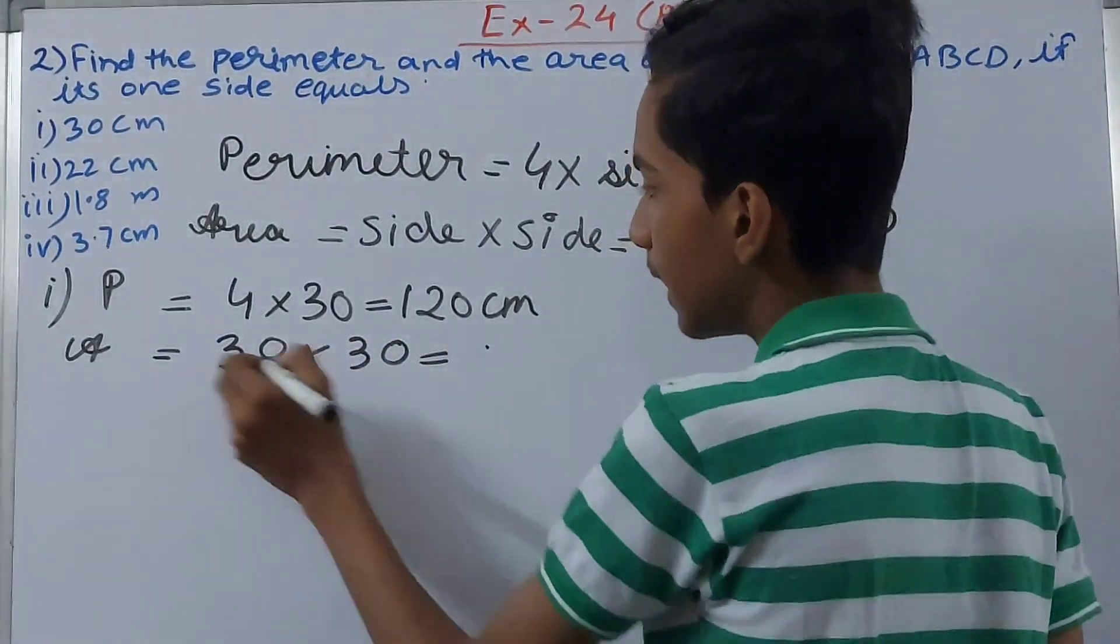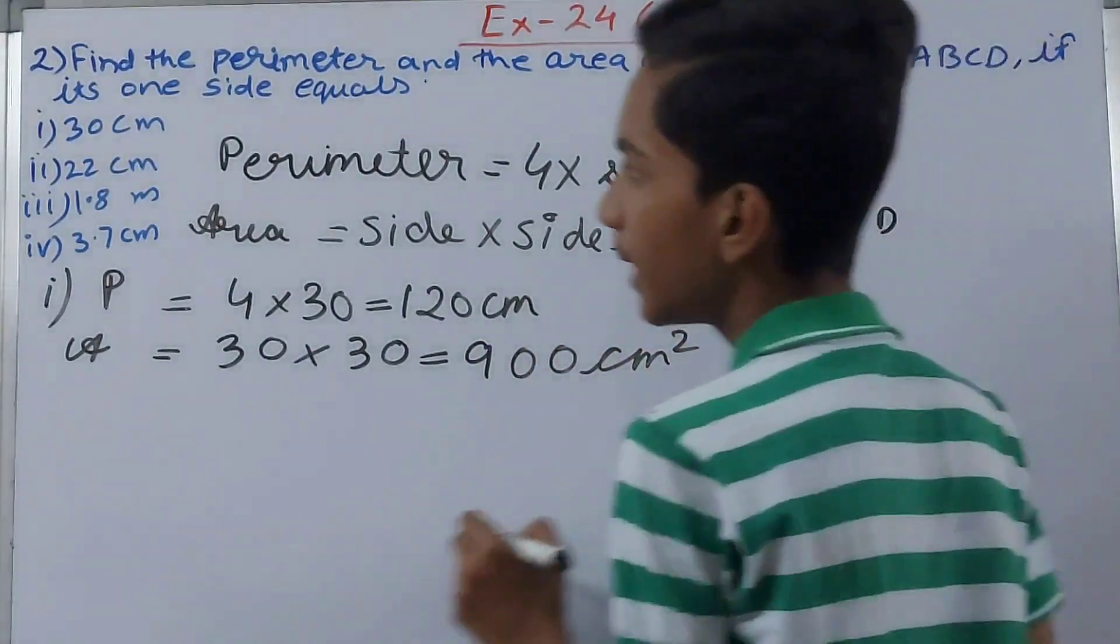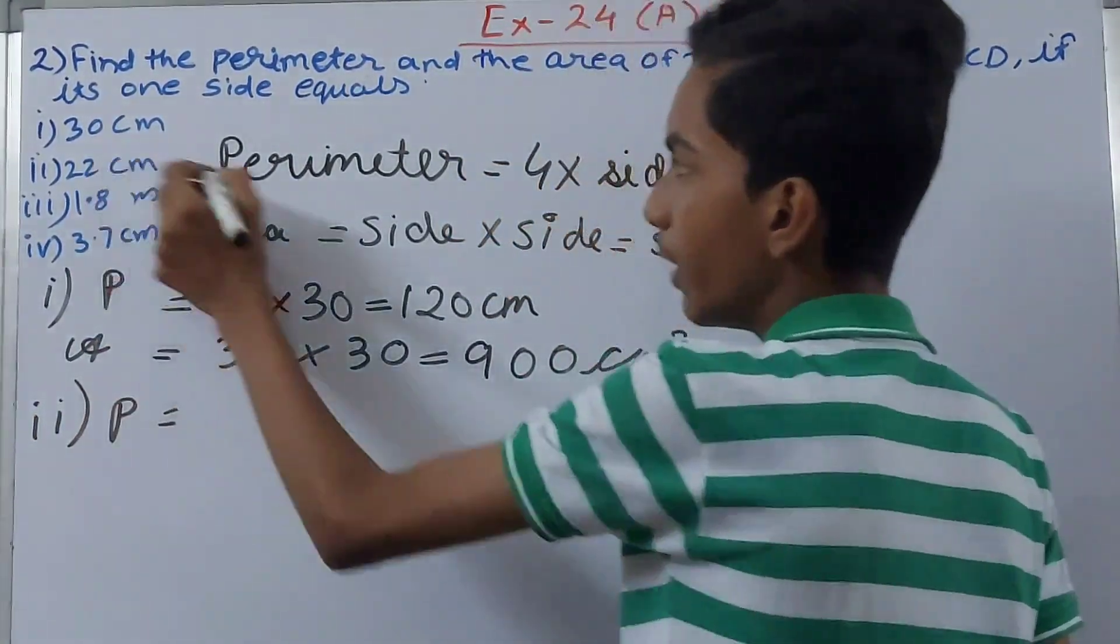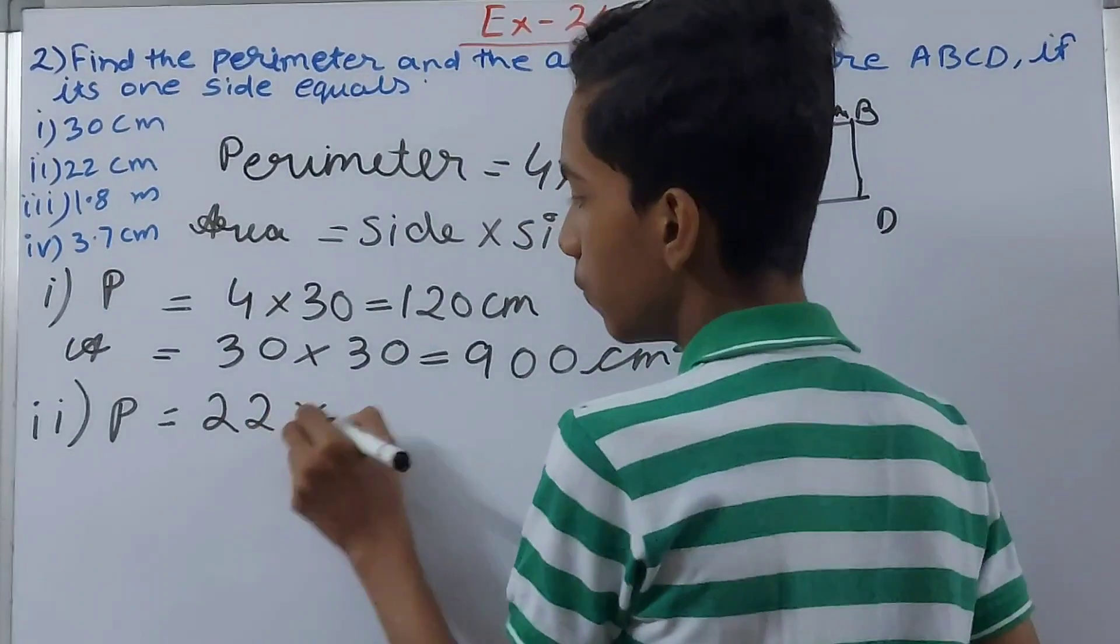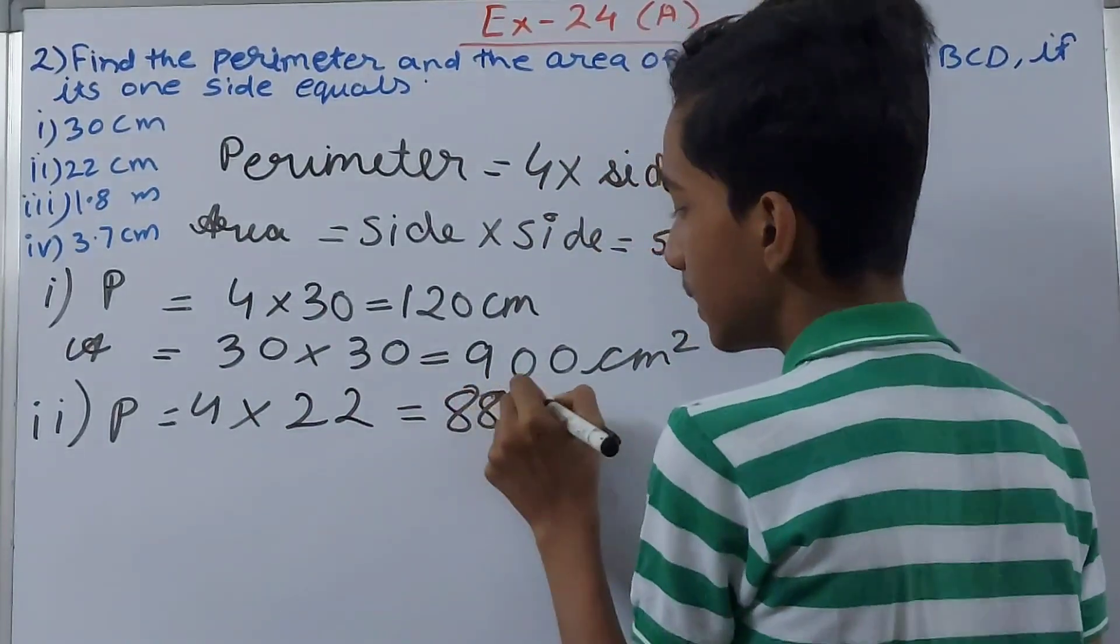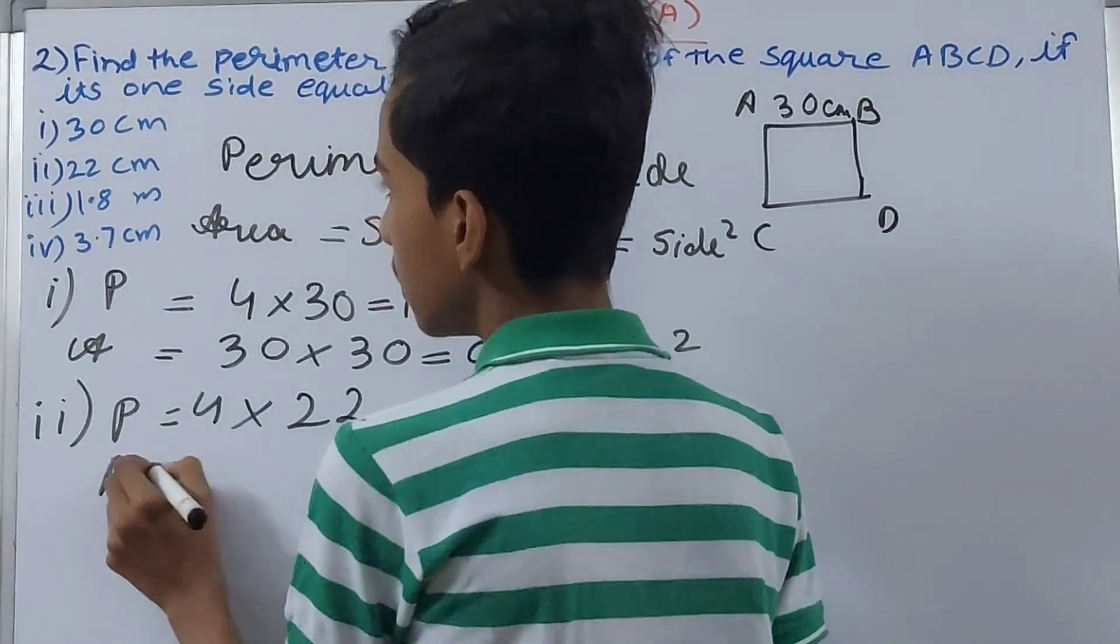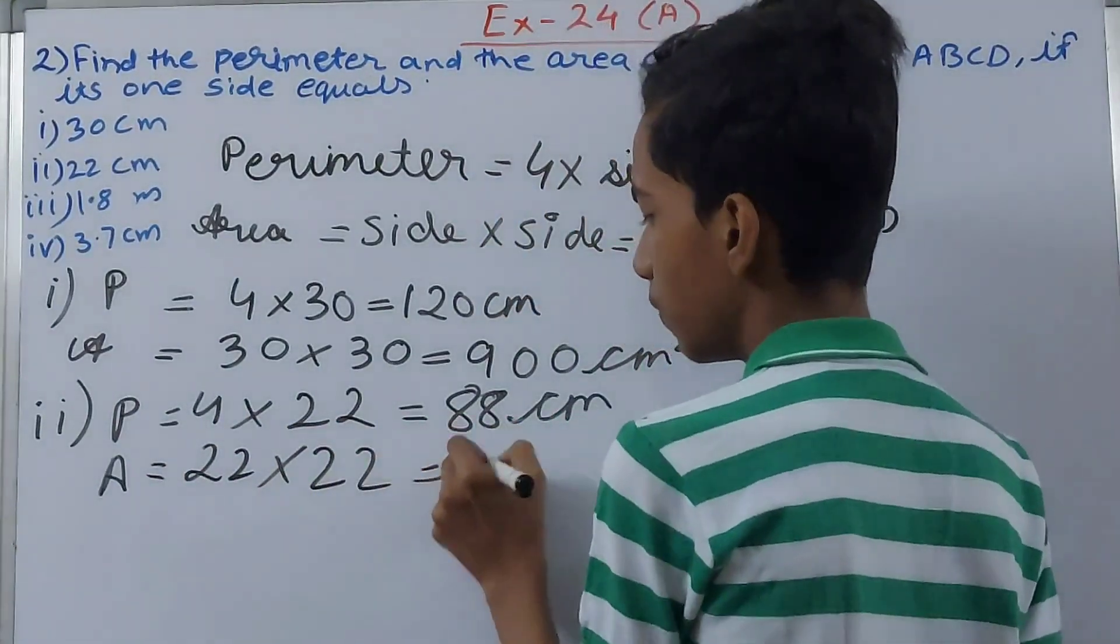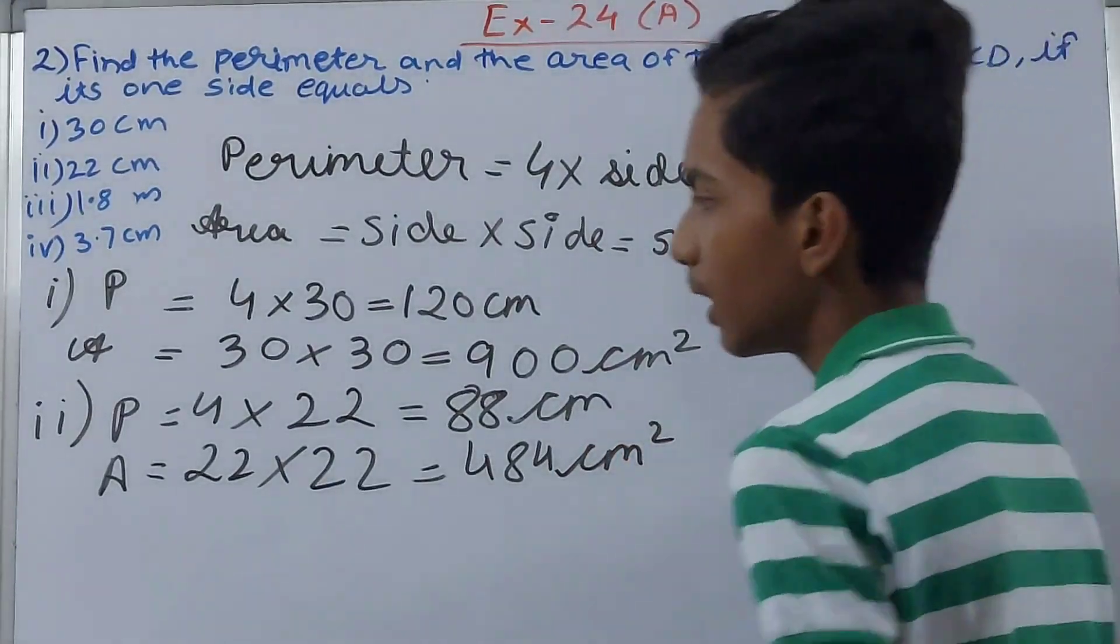For the second part, we have 22 centimeter as the side. So perimeter becomes 4 into 22, that is 88 centimeter. Next, the area becomes 22 into 22, that will be 484 square centimeters.